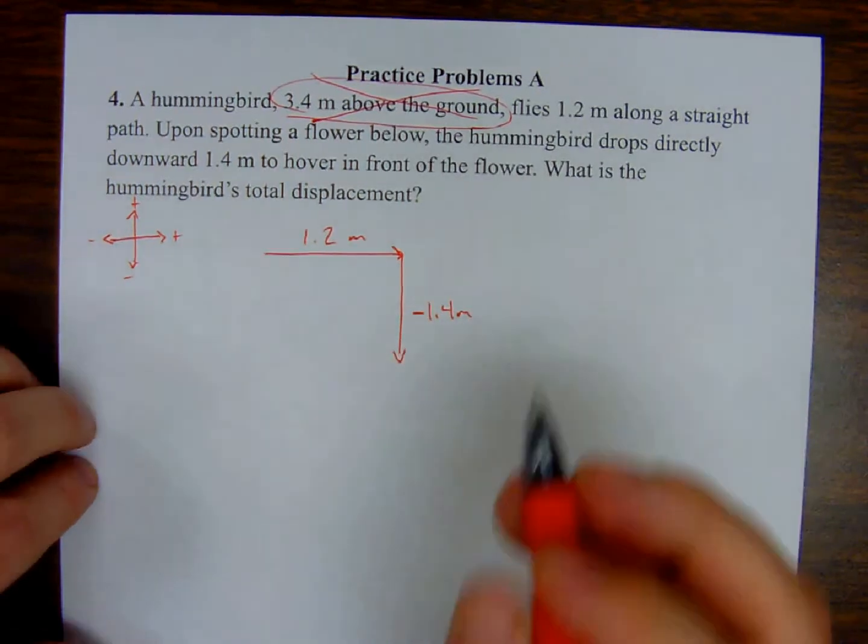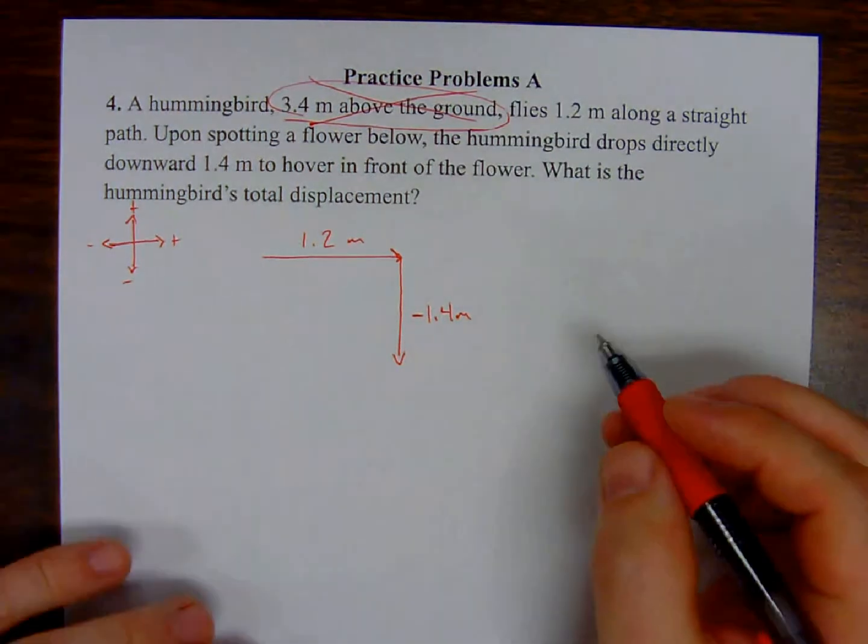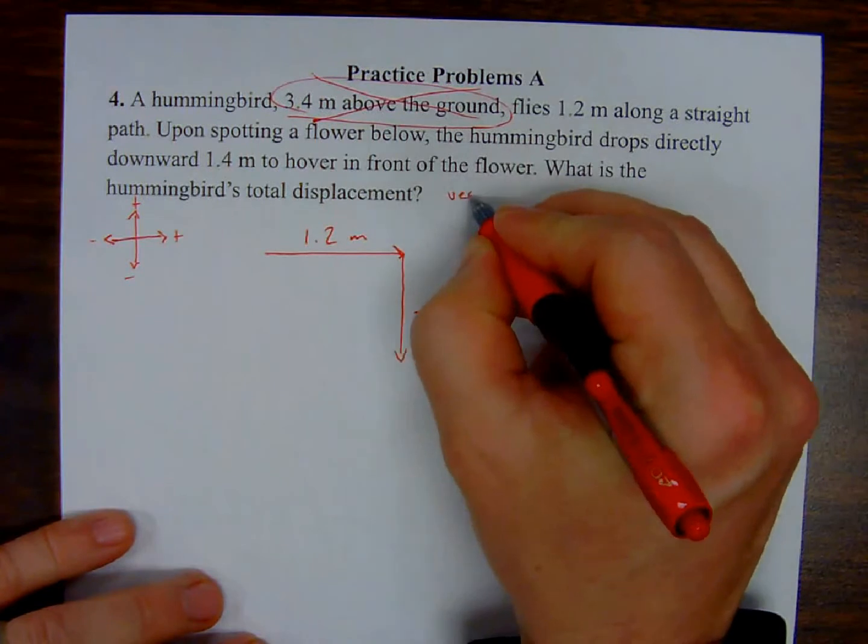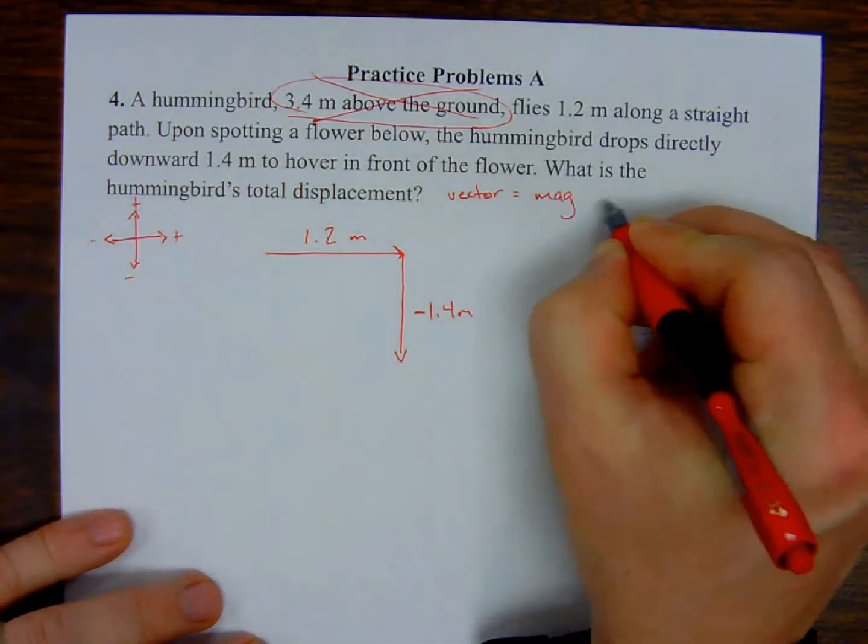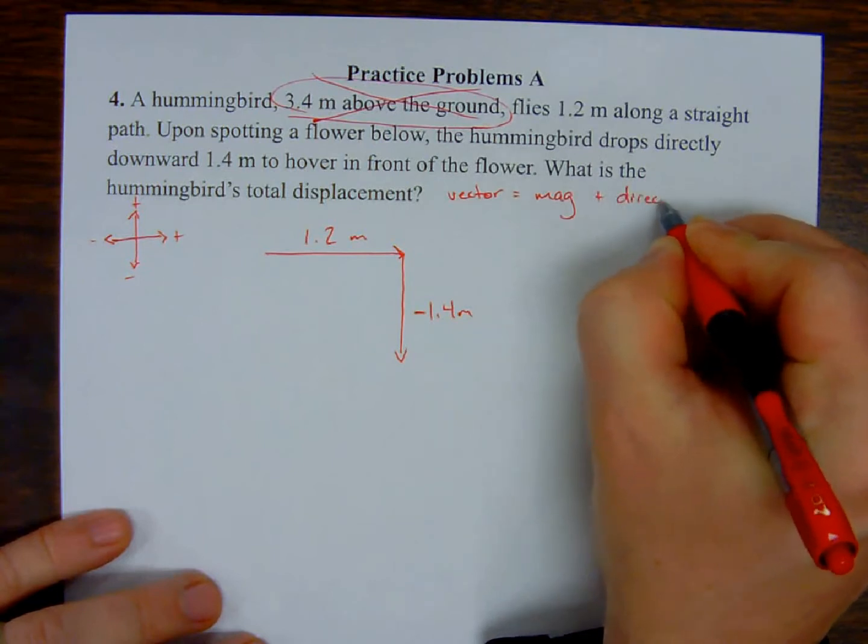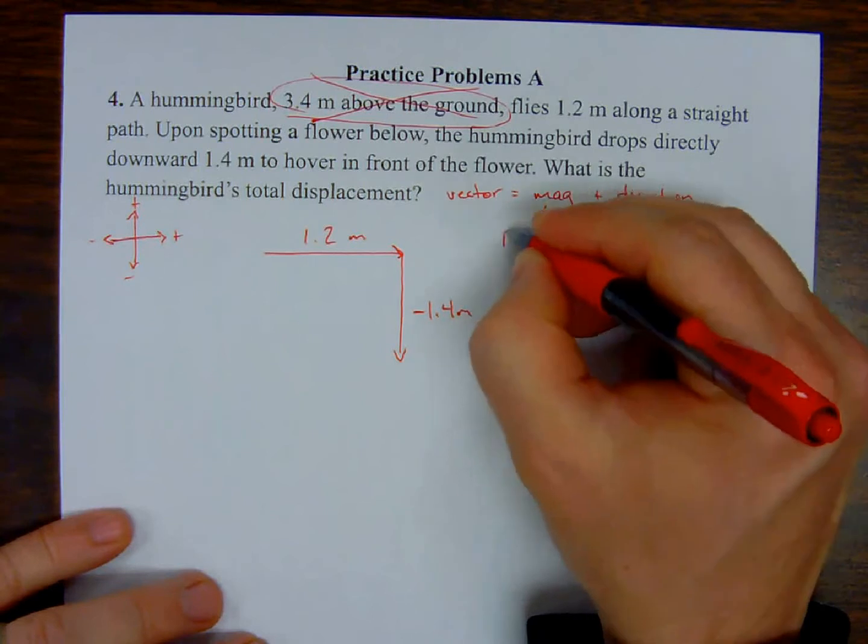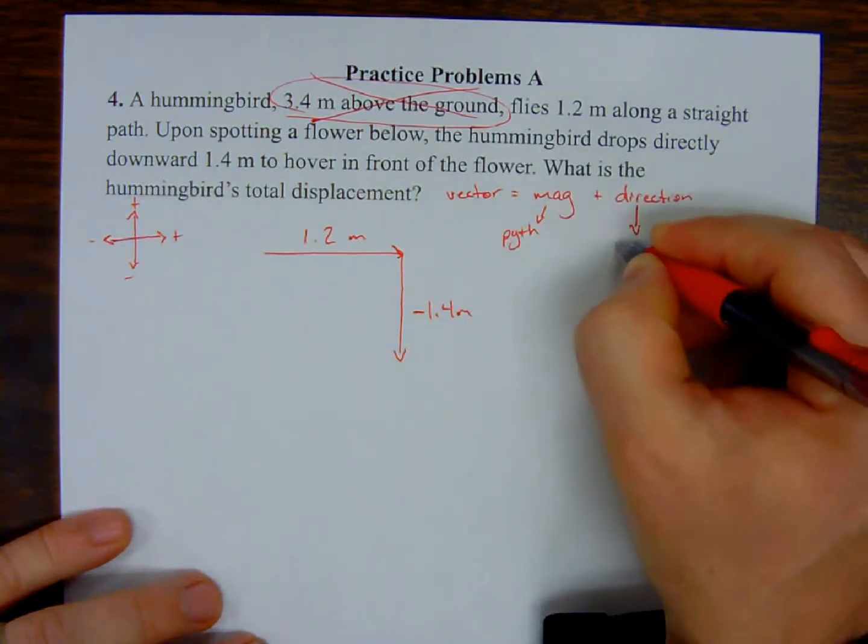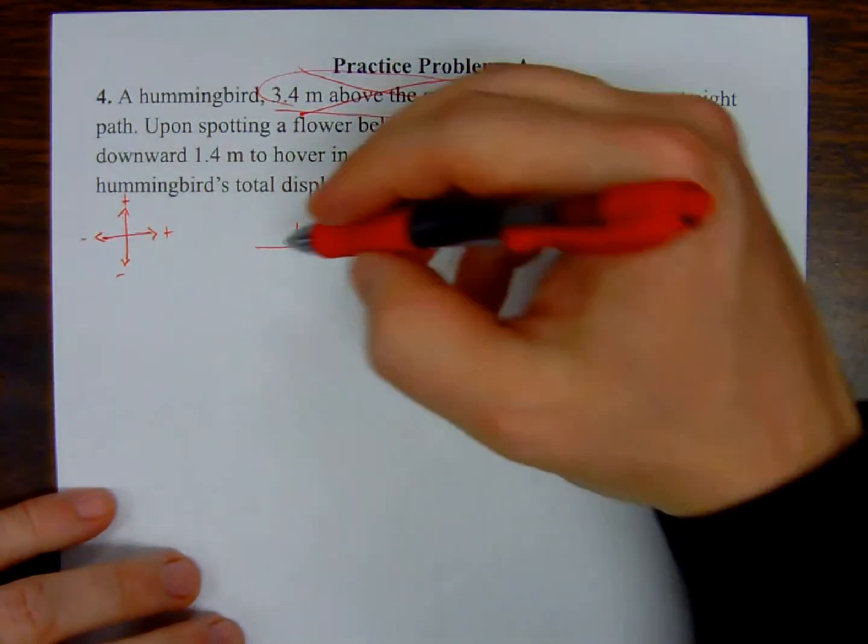I'm looking for displacement, which is a vector, and all vectors have both magnitude and direction. Magnitude is going to be solved by using the Pythagorean theorem. Direction is going to be solved using the inverse tangent function. I'm looking for the magnitude and direction of this resultant right here. I'll represent it as D for displacement.